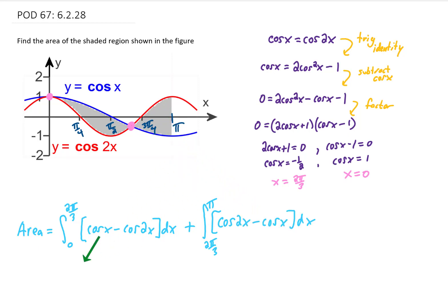Integrating cosine of x gives us positive sine of x. Integrating cosine of 2x gives us 1 half sine of 2x. If you're wondering where that 1 half comes from, I'll explain it in just a second. As far as this integral over here is concerned, we have the same two functions, we just have different limits of integration to plug in.